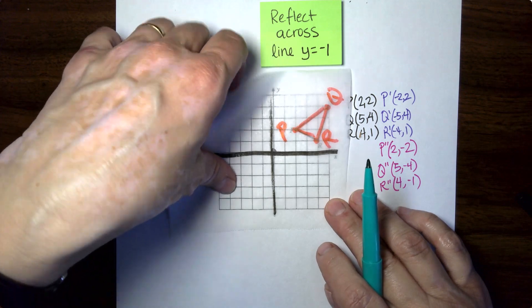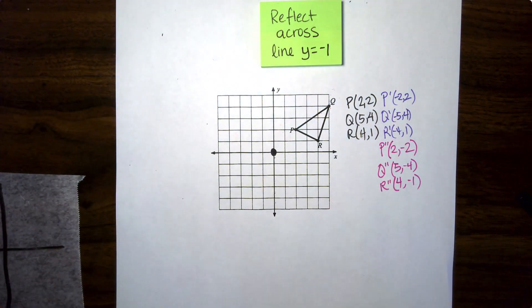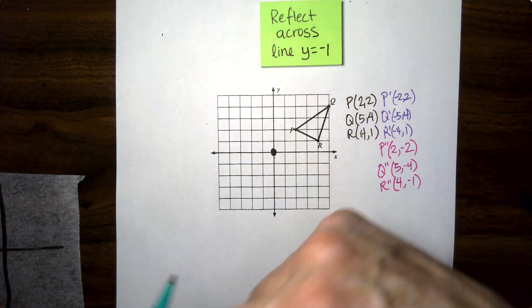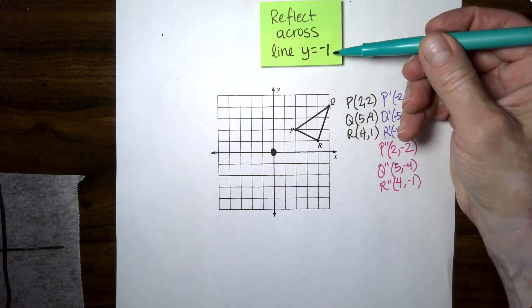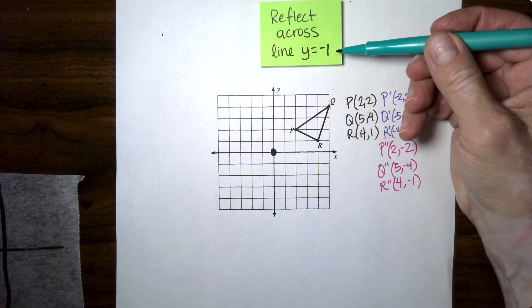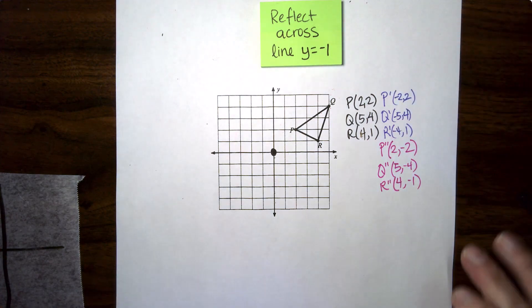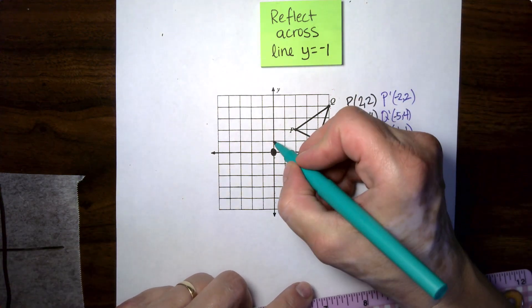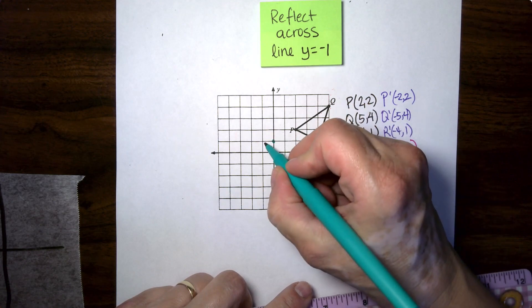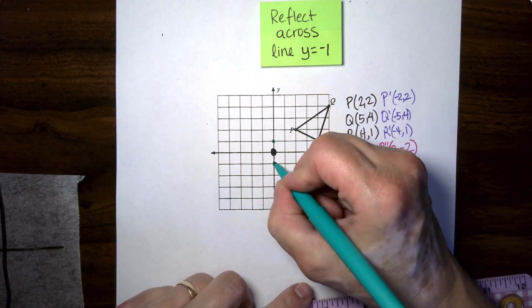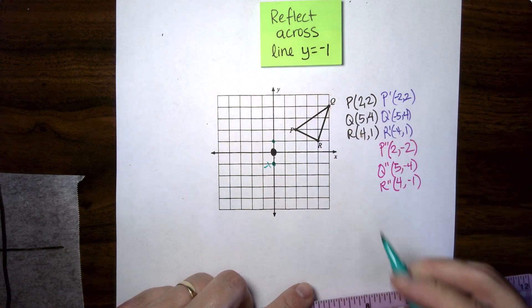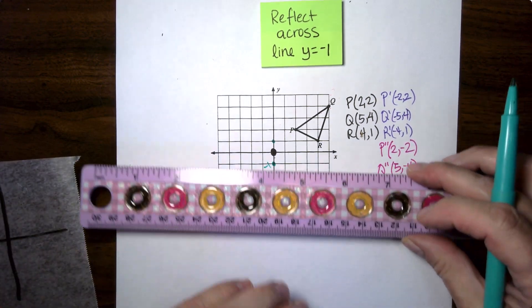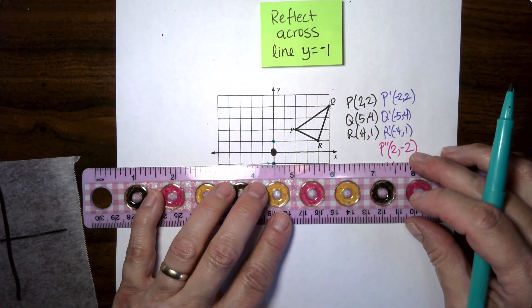So first off, I need to find that line Y equals one. Y equals one is the line where all the Y values are negative one. That's the height. That means the height is set at negative one. The X's can change, but the height has to be negative one. Oopsie, I already made a mistake. It's right here. Negative one.